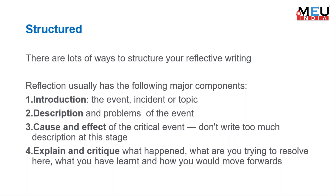Whenever we write reflective writings, there are two types: structured and unstructured. Unstructured is non-academic reflective writing — like our personal diary, learning journals, narratives, or blog writing. But when we expect our students to do it, it is better to have structured writing. A reflection uses the following major components: introduction (the event, incident, or topic and when it happened), description (the process and problems of the events), cause and effect of the critical event, and then explanation and critique.